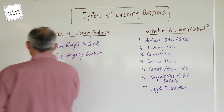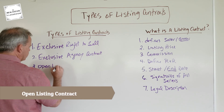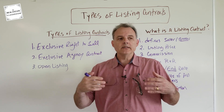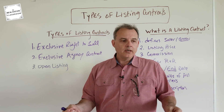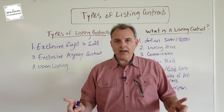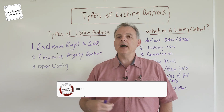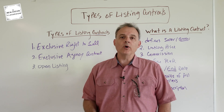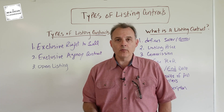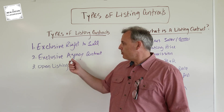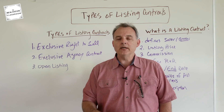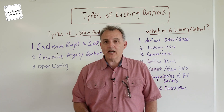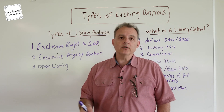The third type is what's called an open listing. An open listing means the seller is allowed to sign a listing contract with as many different brokers as they want. The broker that procures the buyer gets paid the commission. The seller could hire five different real estate firms, but whichever one brings the purchase contract from the buyer is the one that gets paid at closing. Additionally, like an exclusive agency contract, if the seller finds their own buyer, they don't have to pay a commission. It's a rare type, mostly utilized in rural areas.